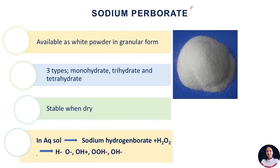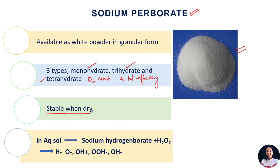Now let's look at sodium perborate. Sodium perborate is a white crystalline powder available as monohydrate, trihydrate, and tetrahydrate according to the oxygen content and bleaching efficacy of the material. It is stable in dry form, but in aqueous solution it breaks into sodium hydrogen borate and hydrogen peroxide. It is this hydrogen peroxide which is responsible for the bleaching action, as already discussed.